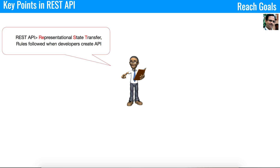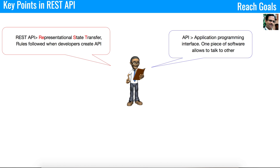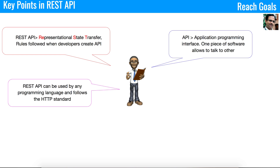Some of the RESTful services include guest account service, view room service, search service, and payment service. Here are some key points to remember about RESTful APIs. REST stands for Representational State Transfer — it sets up the rules followed by developers when creating an application. API stands for Application Programming Interface — it's how one piece of software connects to and talks to another piece of software. RESTful APIs can be used by any programming language.